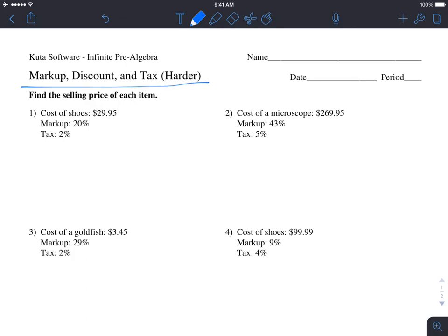This video is going to cover markup, discount, and tax. In another video, we talked about finding the markup, discount, and tax on an individual basis. In this video, we're actually combining all three - either doing markup and discount, or markup and tax, or discount and tax. We're combining two or three of them at the same time, which is a real-life application. Let's get started with number one.